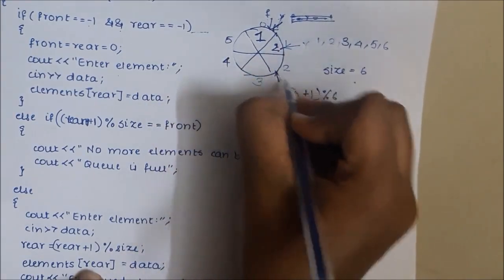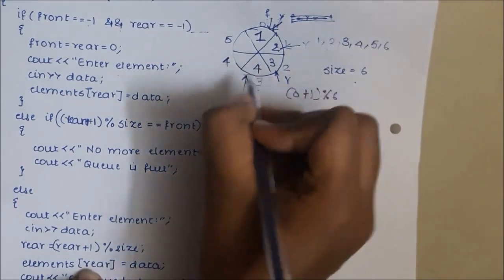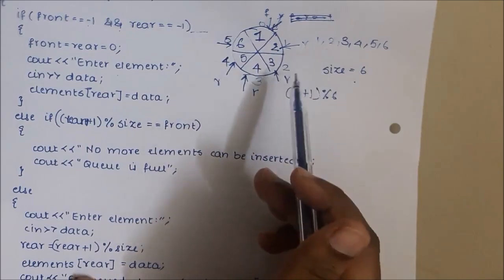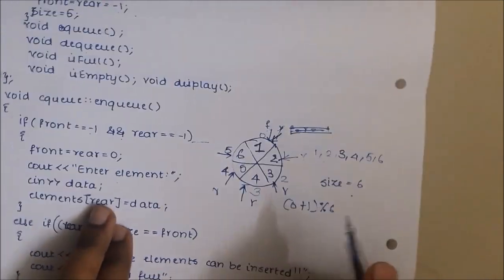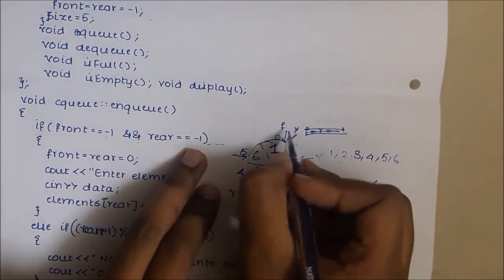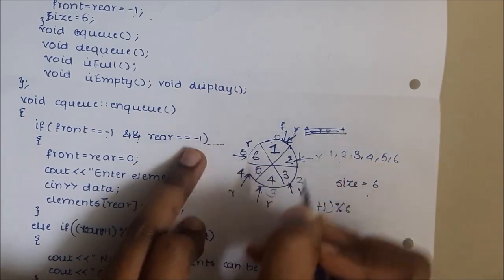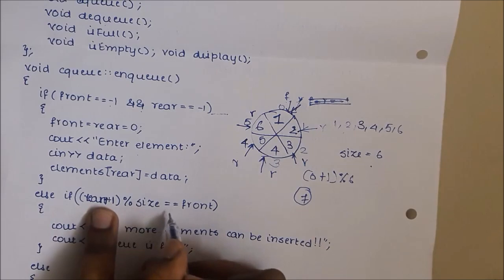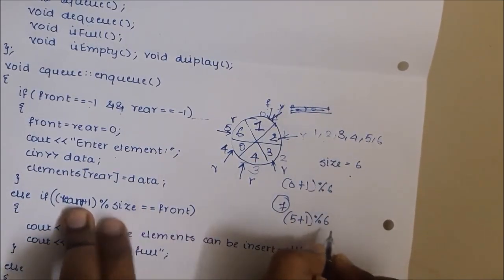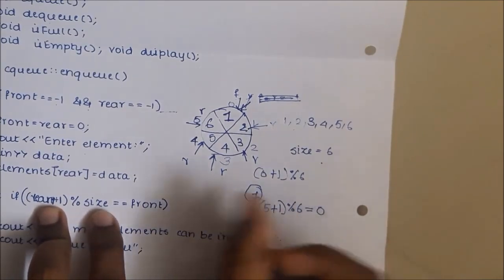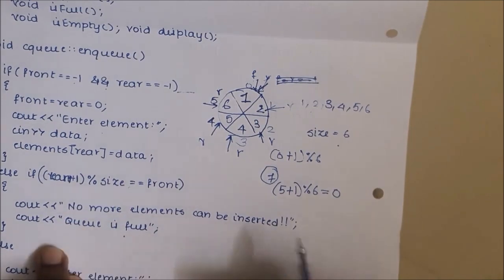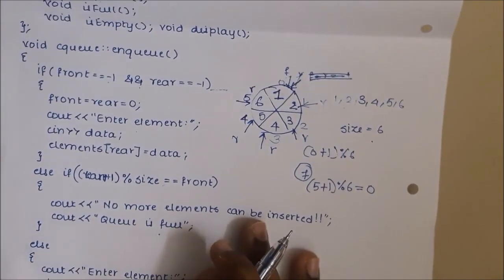This process continues: rear increments to 2 (insert 3), 3 (insert 4), 4 (insert 5), and 5 (insert 6). Now the queue is full with no vacant positions. If we try to insert 7, front is 0 and rear is 5. We check (5 + 1) % 6 = 0, which equals front. The condition is true, so it prints the message: no more elements can be inserted — queue is full. This is the implementation to enqueue an element in the circular queue.